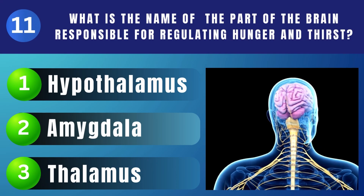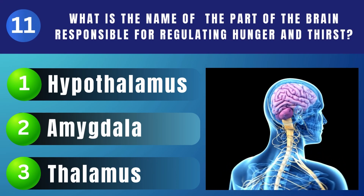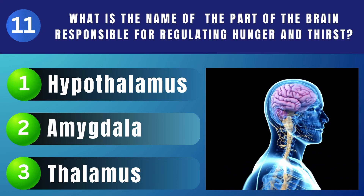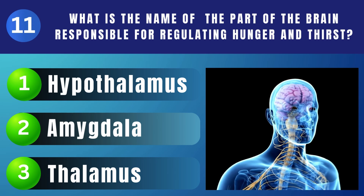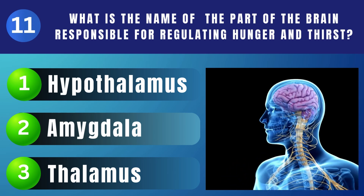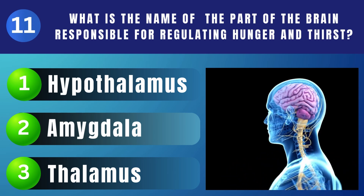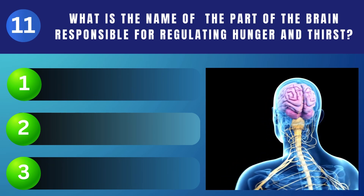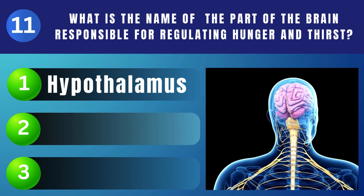What is the name of the part of the brain responsible for regulating hunger and thirst? Hypothalamus.